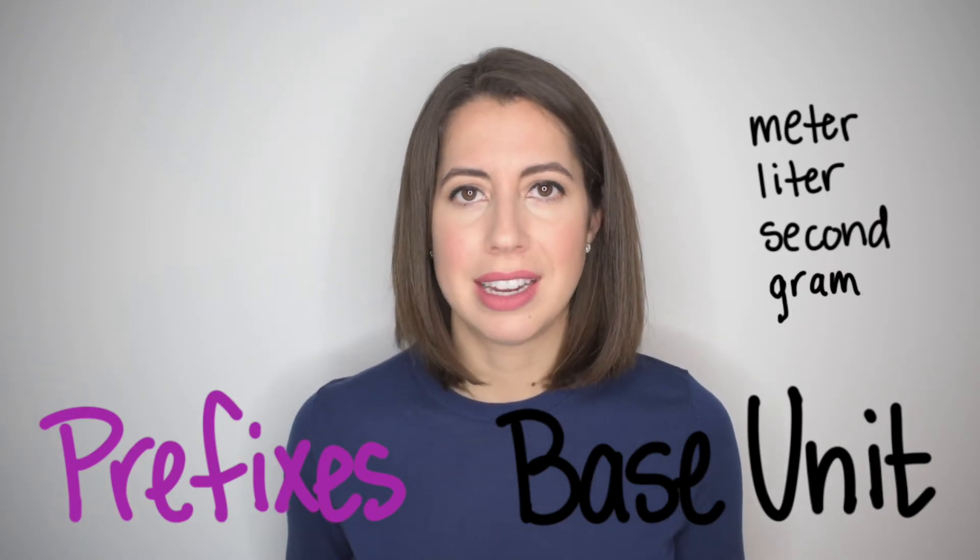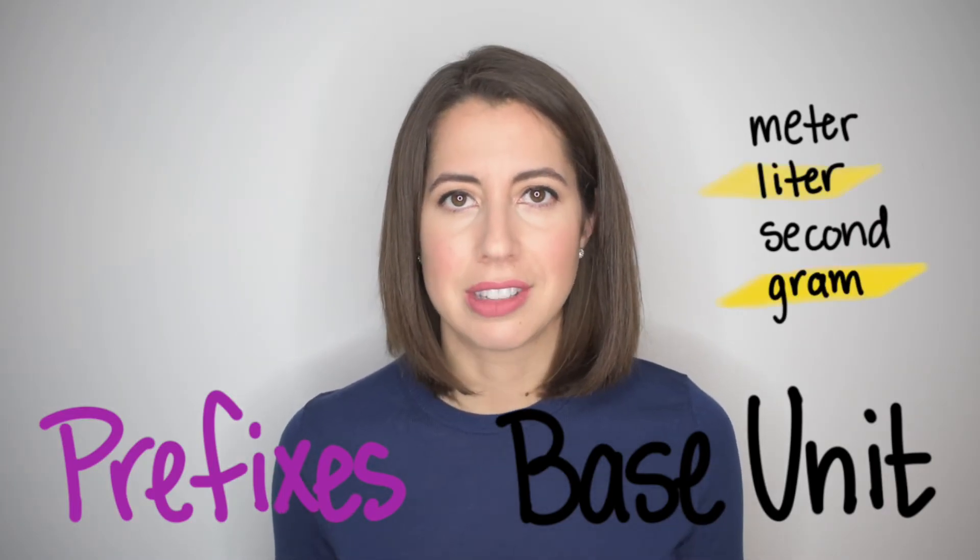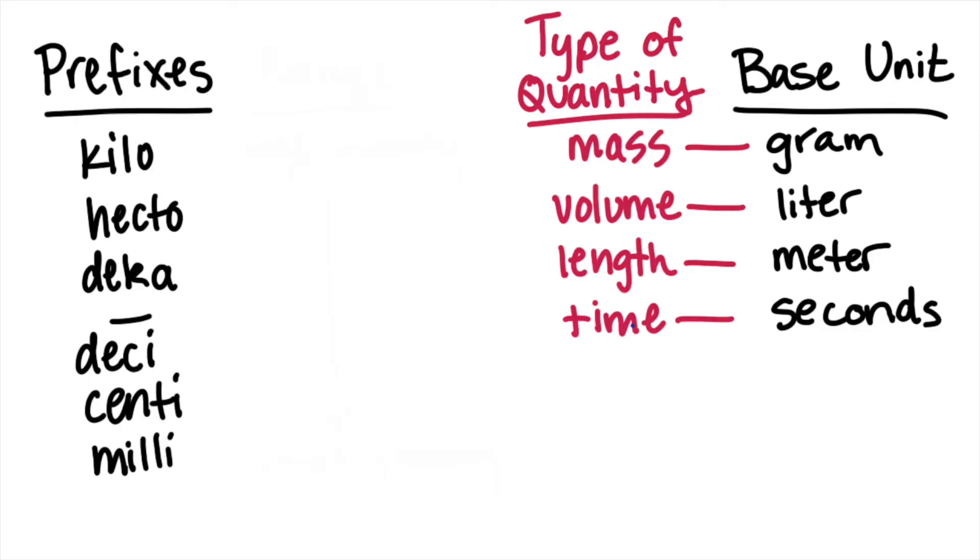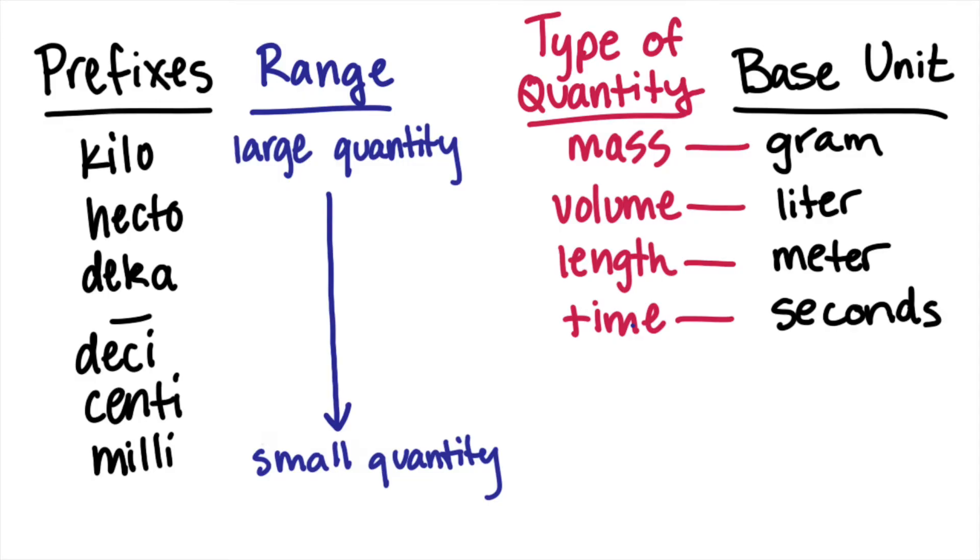For today's example, we're going to stick to grams and liters. The base unit tells us the type of quantity that we're measuring, and the prefixes are added to describe the range of measurement. For example,